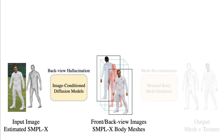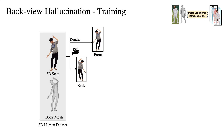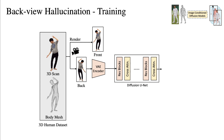We now describe how we train and incorporate an image-conditioned diffusion model within our pipeline. We start with a 3D human dataset, rendering both front and back-view images for training. To learn a distribution of back images conditioned on a front image, we employ a pre-trained latent diffusion model. However, this model alone is not sufficient for generating back images that are perceptually consistent and spatially aligned with the front images.